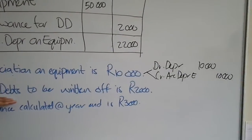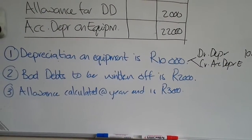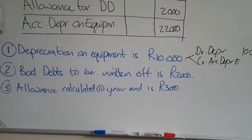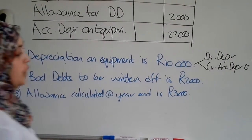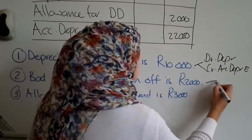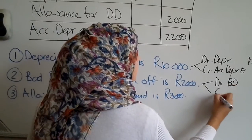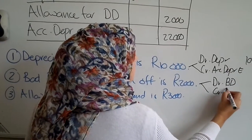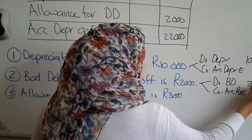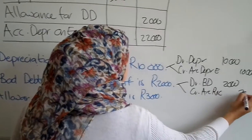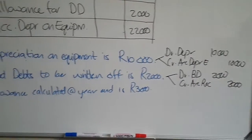For transaction two, bad debts to be written off is 2,000 Rand. You obviously would have needed to go and calculate how much bad debts to write off, but your journal entry would be: debit bad debts, credit accounts receivable, and the amount is 2,000 Rand. That is for transaction two.